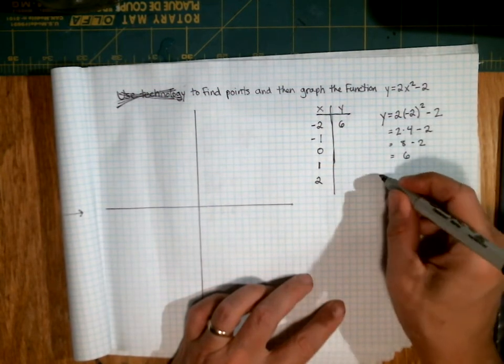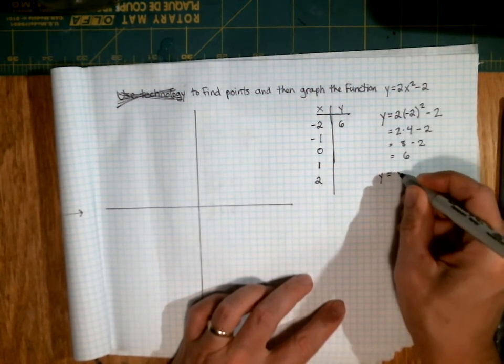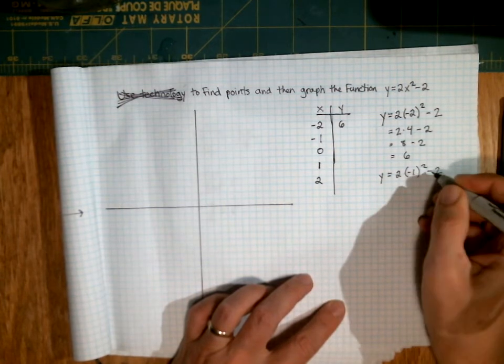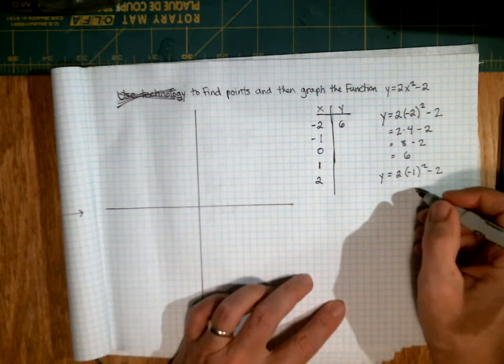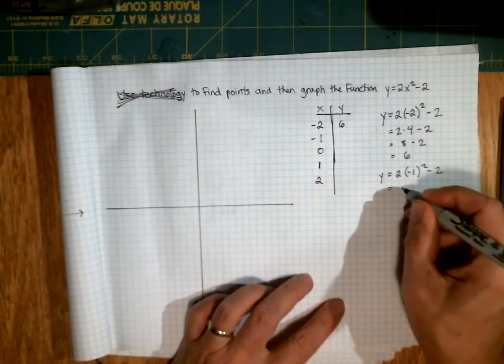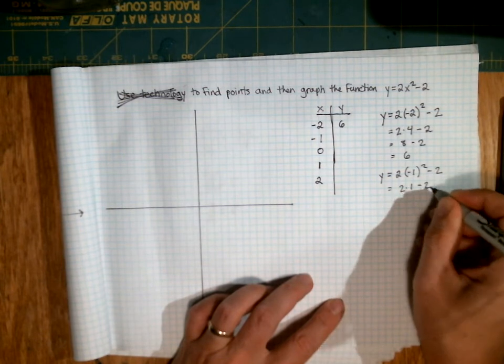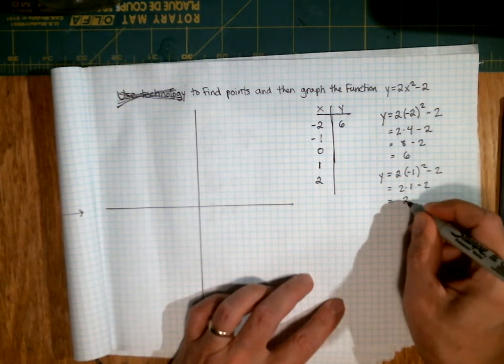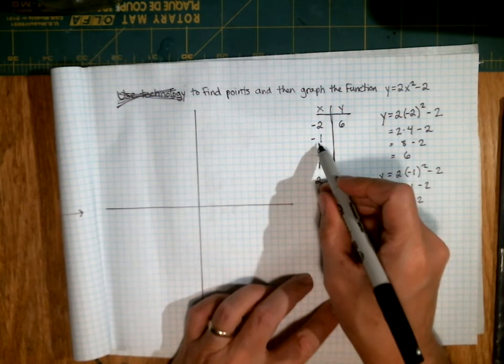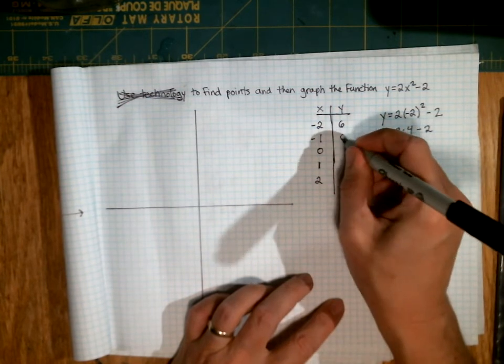And similarly, I'm going to substitute in a negative 1. So I'll get y equals 2 times negative 1 squared minus 2. Negative 1 squared is just positive 1. Negative times a negative makes a positive. So this is 2 times 1 minus 2, which is 2 minus 2, which is 0. So when x is negative 1, my y value is 0.